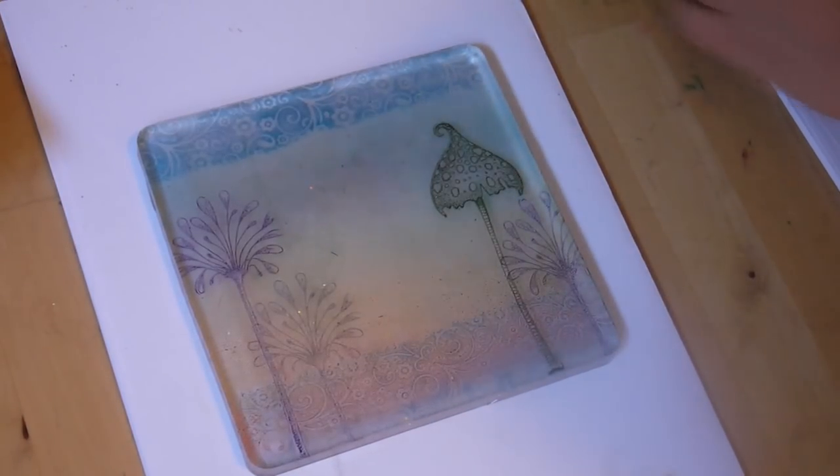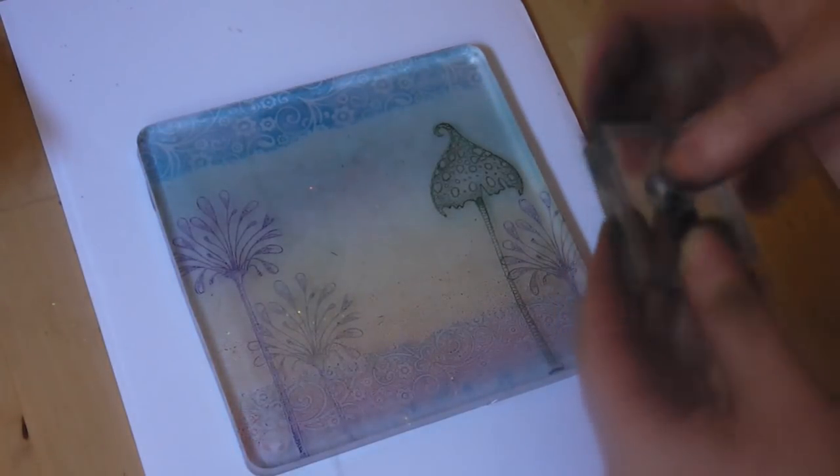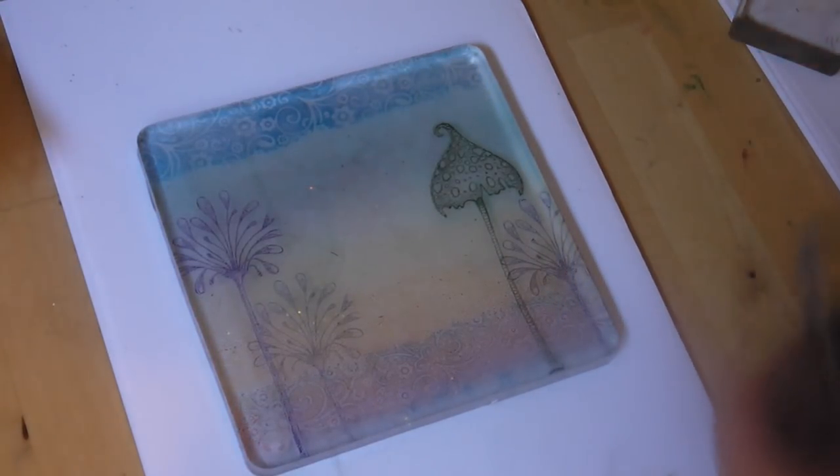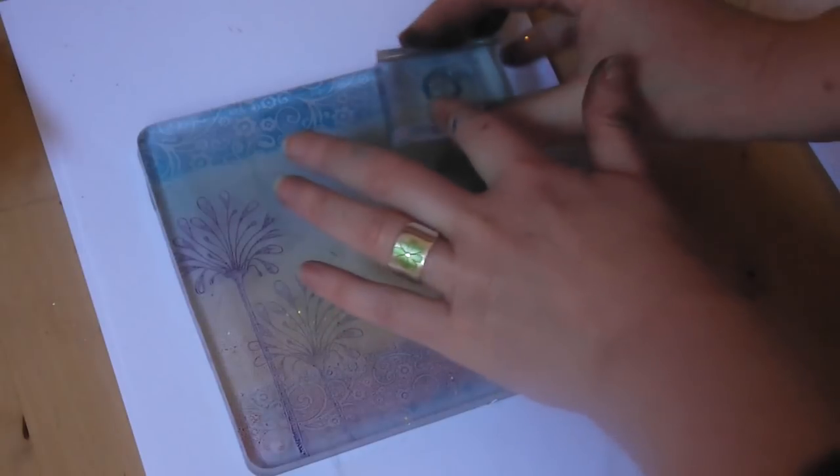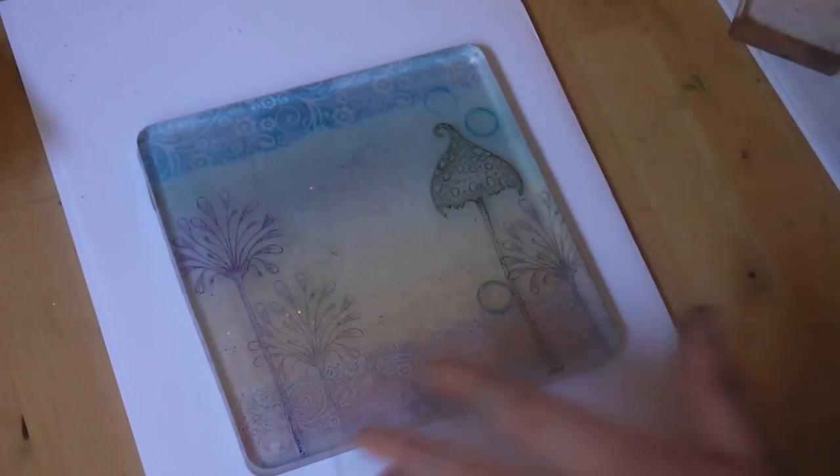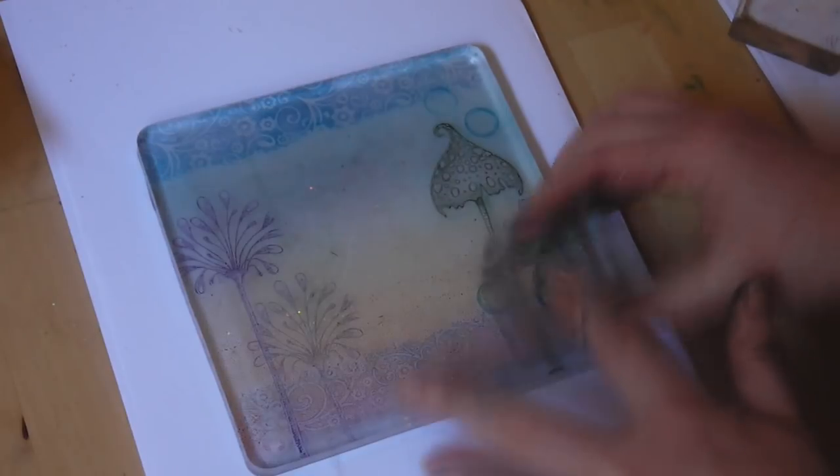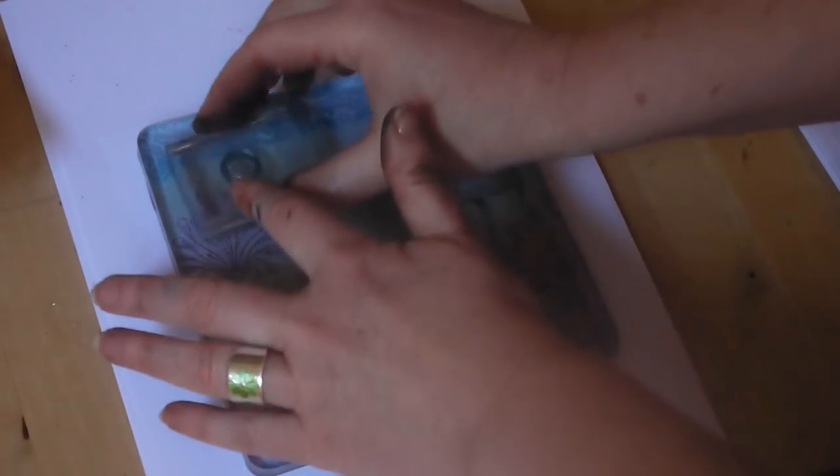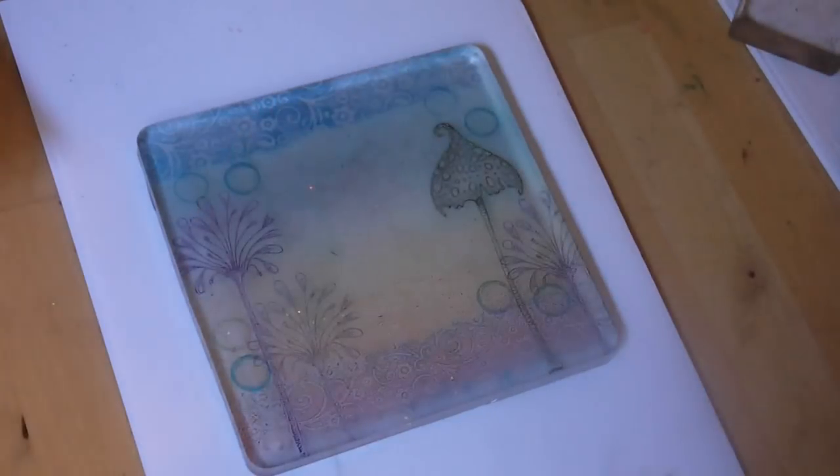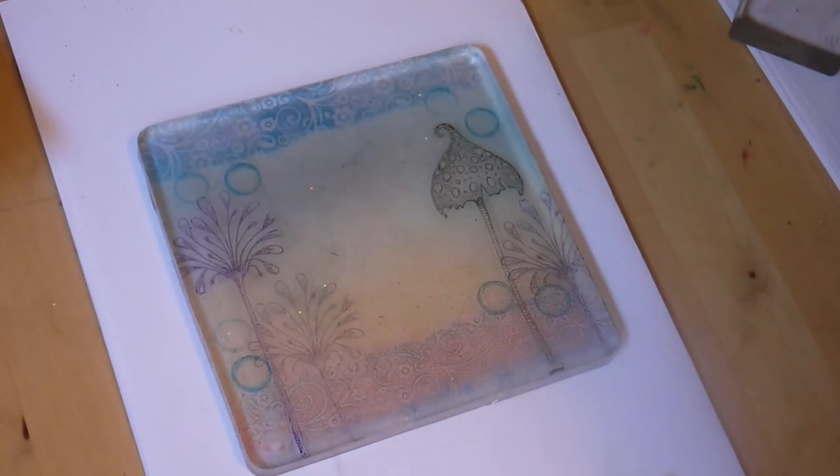Now we've got some very small little bubble stamps here. I'm just going to ink those up in the deep lagoon. I'm just going to pop a few of those about—it's all about building up lots of texture, color and pattern, using our very small bubble stamps.